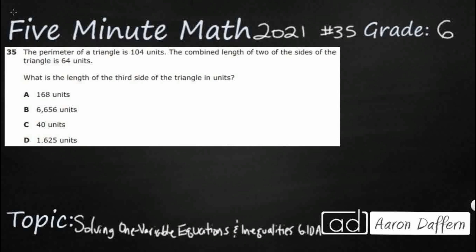So we have a pretty simple problem here. The perimeter of a triangle is 104 units. We don't know what type of triangle it is, so I'm just going to make either a scalene, maybe an equilateral, or an isosceles, doesn't really matter. The combined length of two sides is 64, and the entire perimeter is 104, so we need to find the third side length.